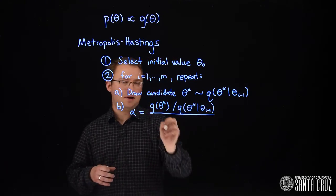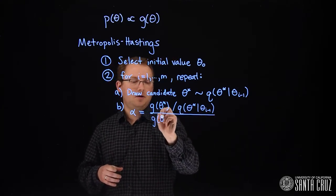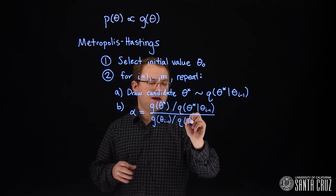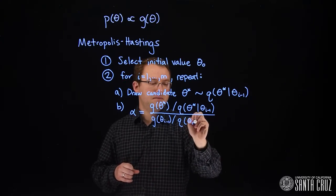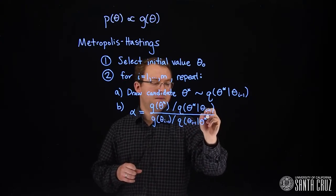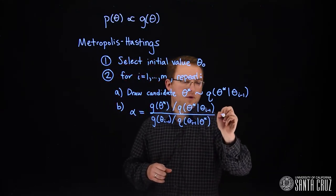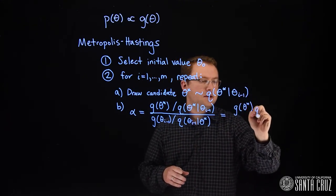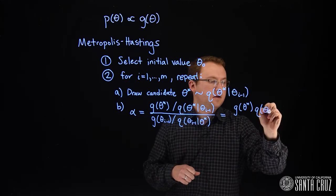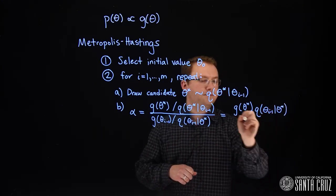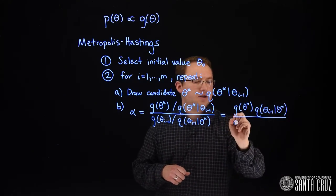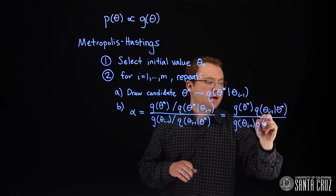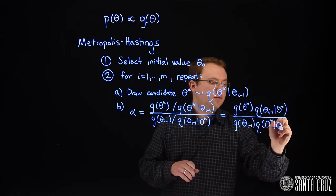And all of this will be divided by g evaluated at the old iteration, divided by q evaluated at the old iteration given the candidate value. If we rearrange this, it will be g of the candidate times q of the previous value given the candidate divided by g at the previous value and q evaluated at the candidate given the previous value.